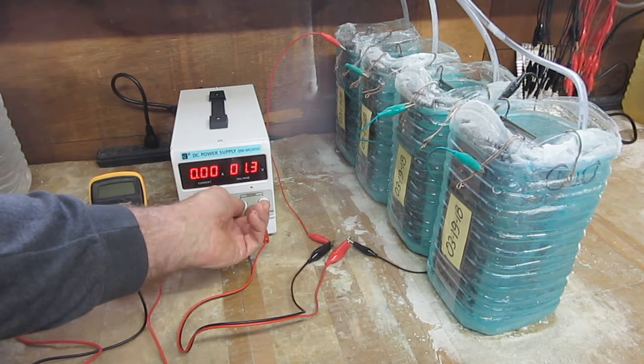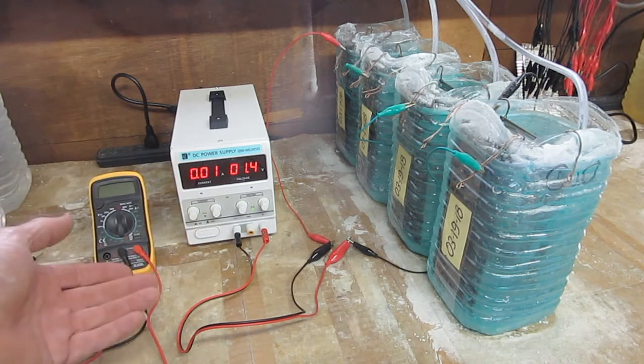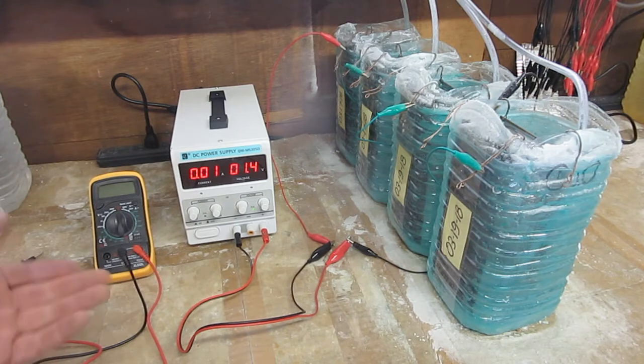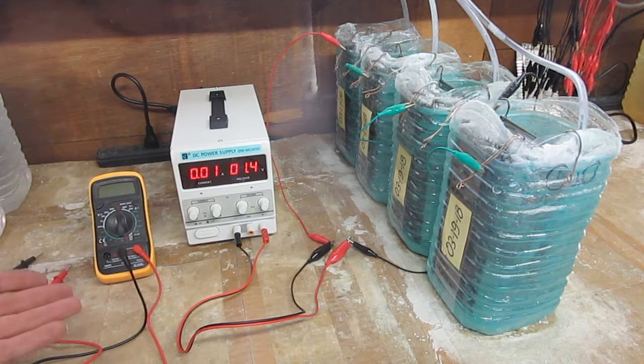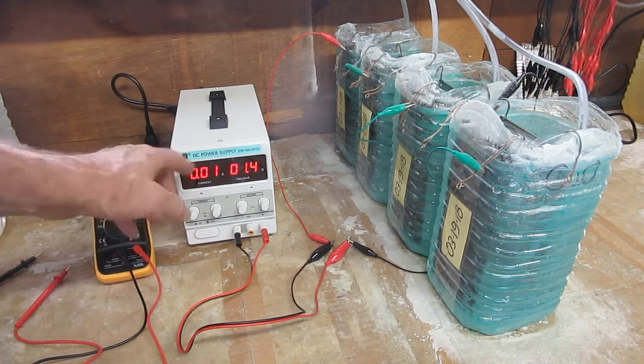Now I'll turn this up a little bit so you can see. So that's one one-hundredth of an amp. Now one one-hundredth of an amp is really 10 milliamps because a milliamp is one-thousandth of an amp. So it won't show anything less than 10 milliamps.